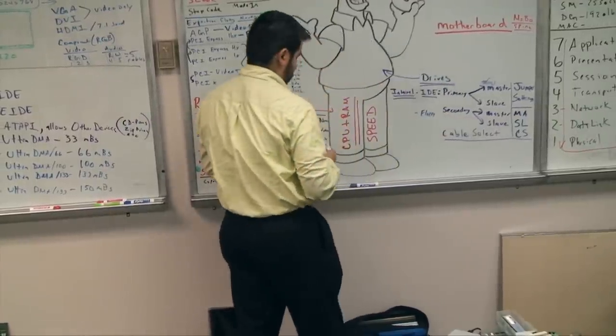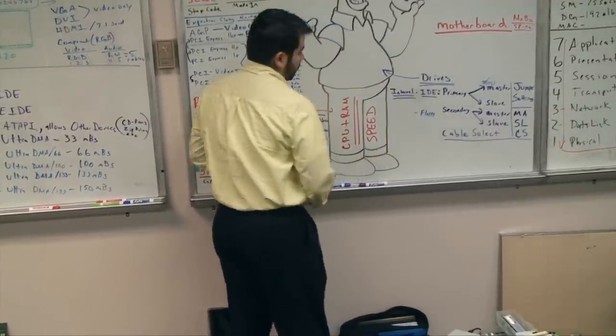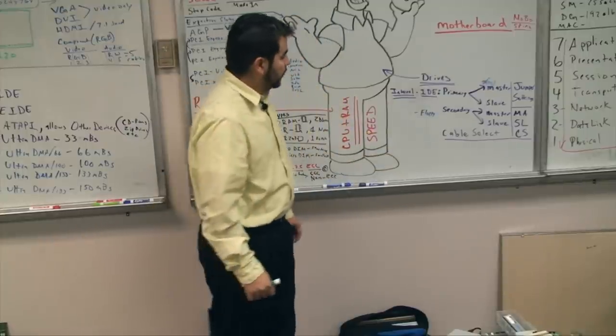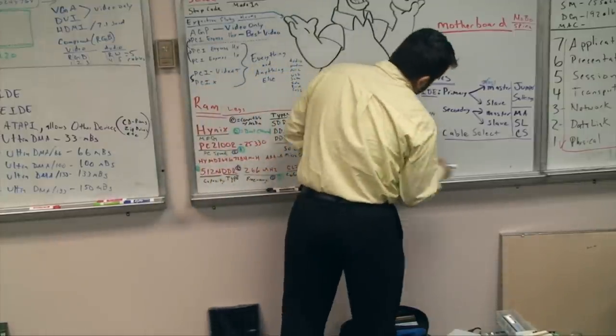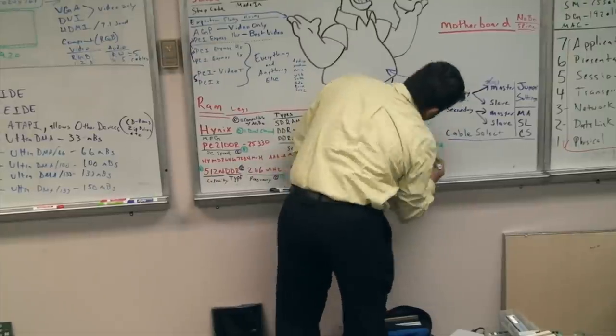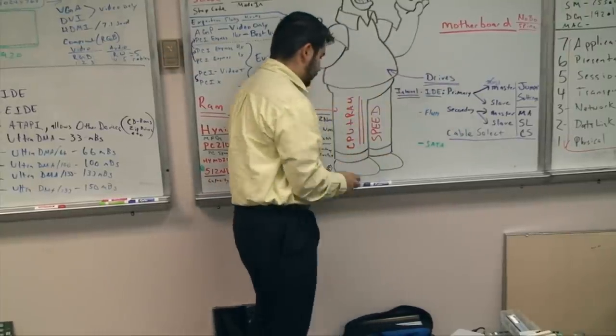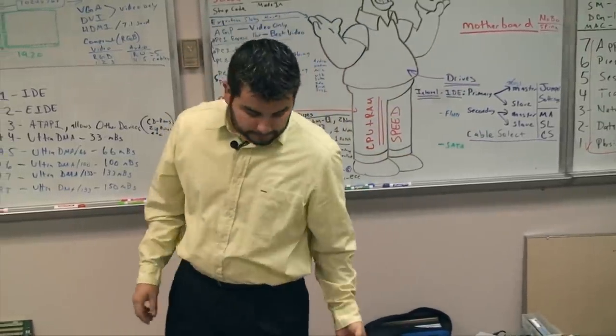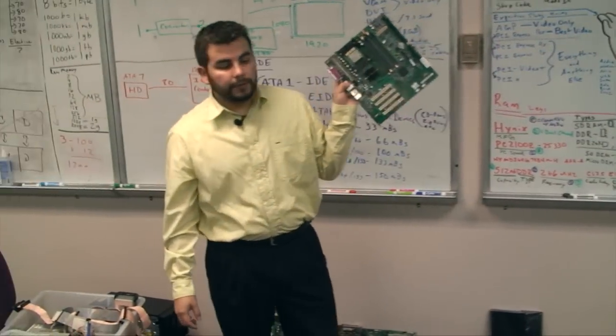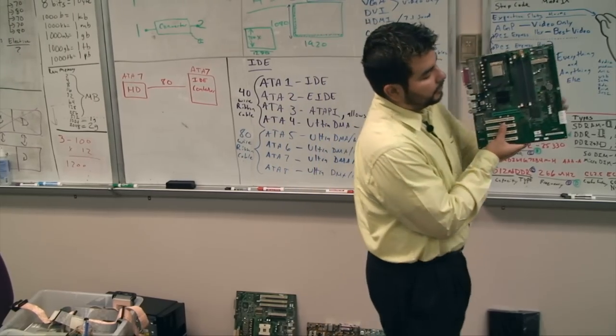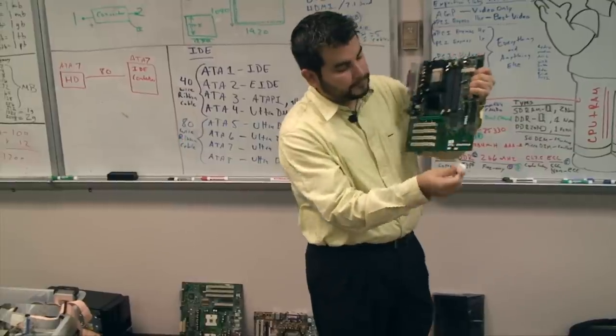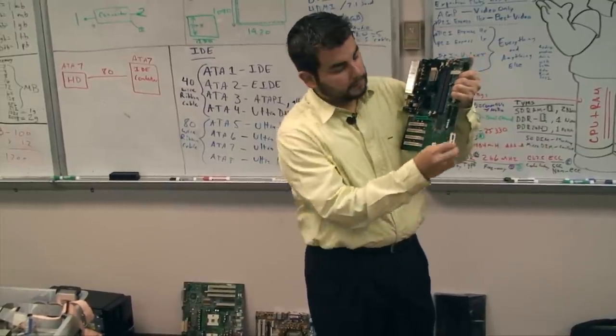We have IDE connection, we have a floppy connection. Then the next type of connection that we have would be serial ATA or SATA. On your boards, the serial ATA connection is right here where this white piece is. Now this white piece does come off so it might look like that.